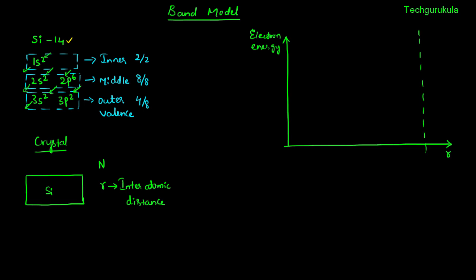The energy levels of each individual subshell — the 1s level for all n silicon atoms — will be exactly the same because it's a non-interacting system. Similarly for 2s, 2p, 3s, and 3p; as we go up, the electron energy increases. For the 1s level we have 2n available states, all 2n filled. For 2s: 2n out of 2n filled. For 2p: 6n out of 6n filled. For 3s: 2n out of 2n filled. For 3p: 2n out of 6n states are filled.